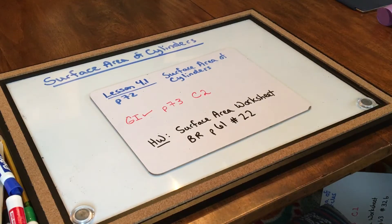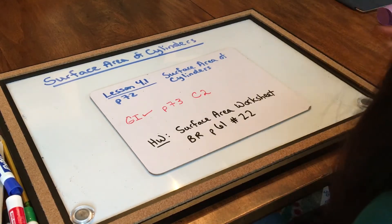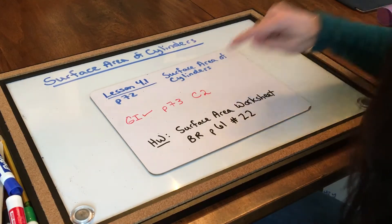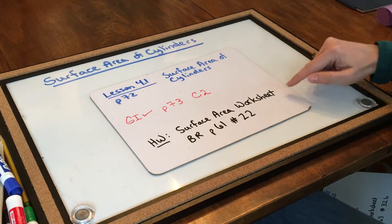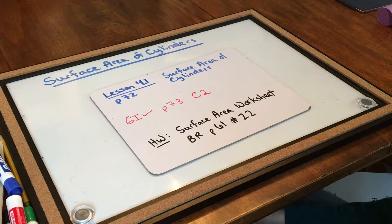Hi, 7th grade. Today we're going to be working on surface area of cylinders, so that is lesson 4.1, page 72 of your book. Our gotta check is going to be on page 73, and we're going to try C2. Your homework for tonight is the surface area worksheet, and your bell ringer is page 61, number 22.